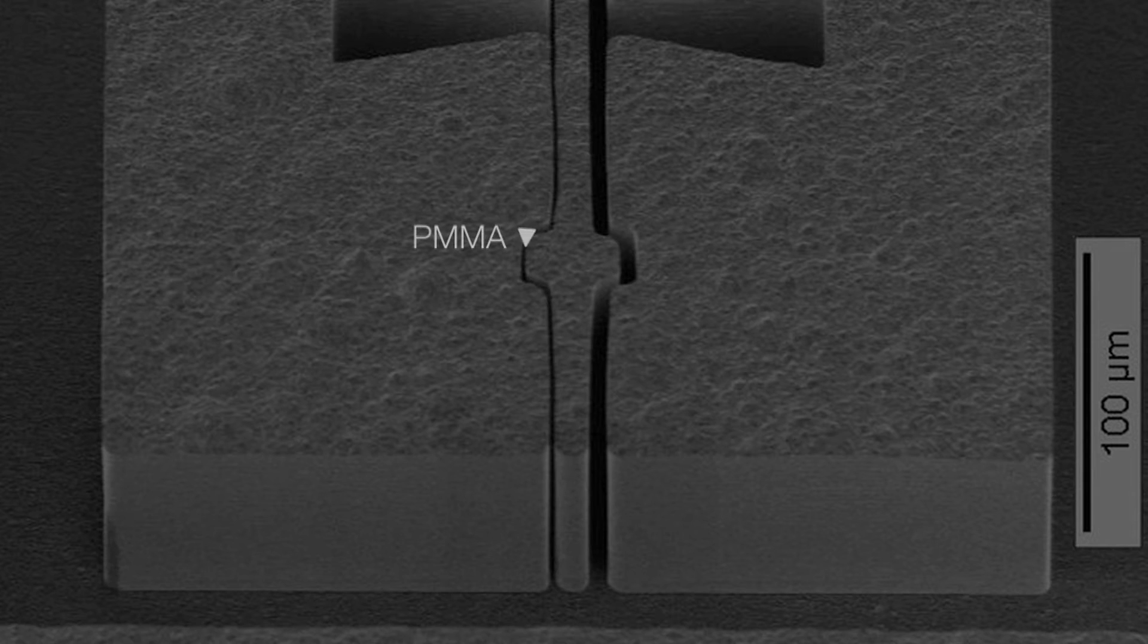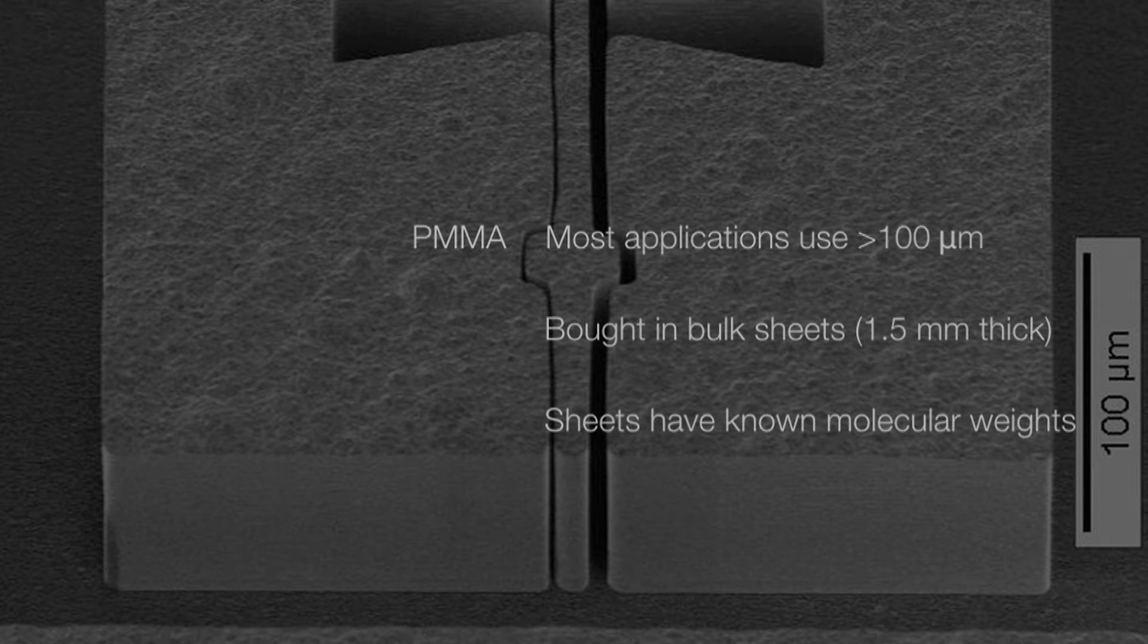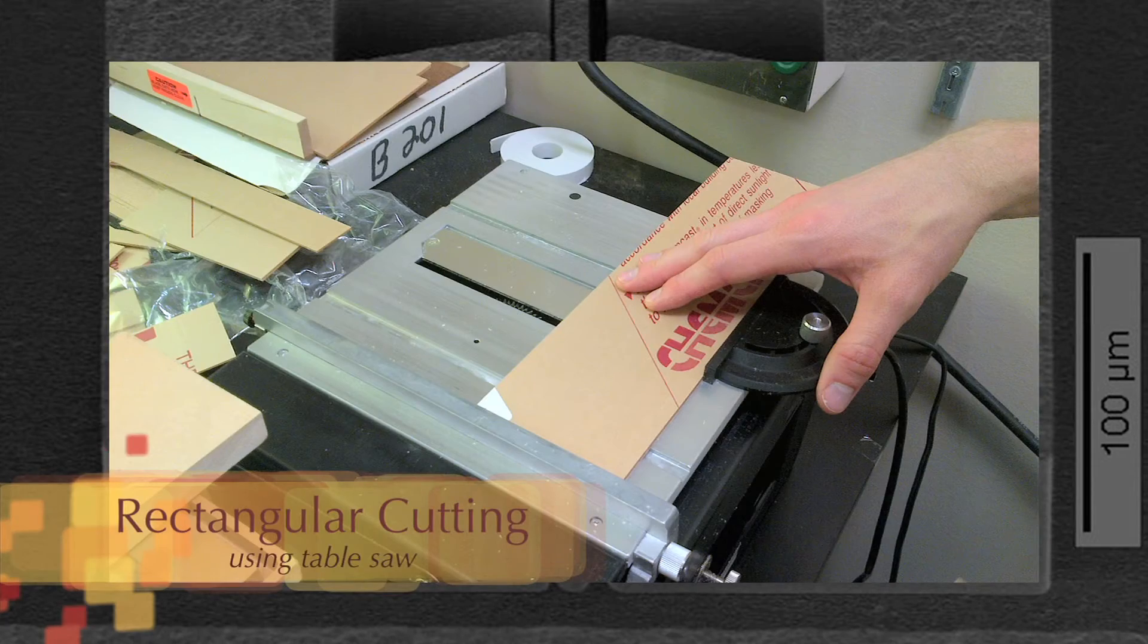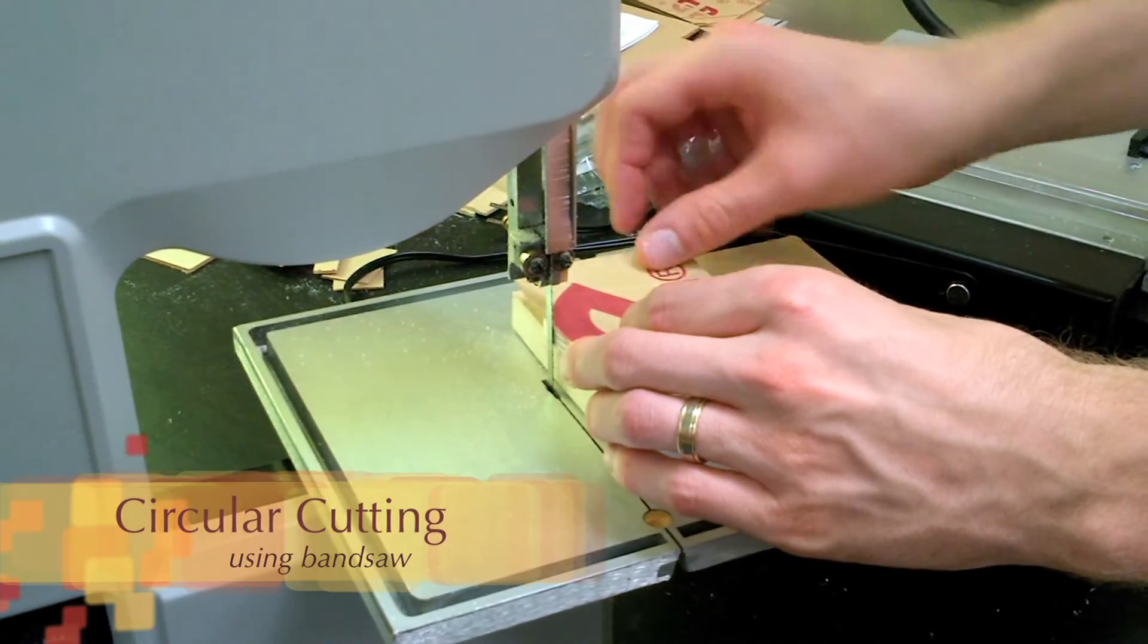Given the thickness of the PMMA resist for most applications, greater than 100 micrometers, PMMA is typically bought with known molecular weights in bulk sheets of 1.5 millimeters in polymer thickness. The PMMA is cut to the desired shape, typically rectangular or circular, depending on the type of mask and the design layout that is to be used for the exposure.